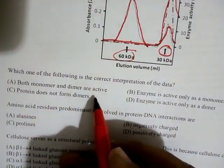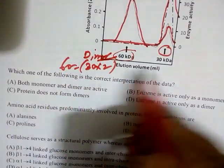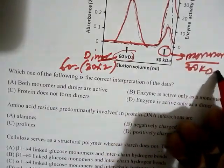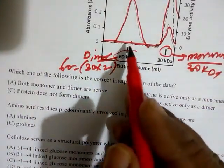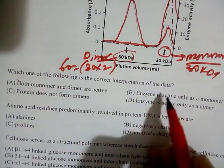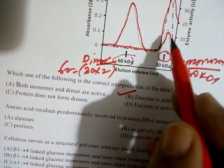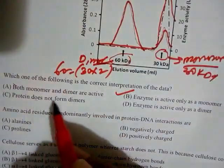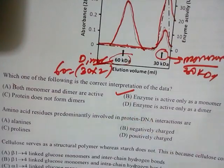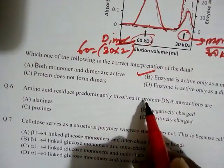This indicates the enzyme is a dimer (30 × 2 = 60 kDa), and the monomer unit is 30 kDa. Since activity is only present at the 30 kDa peak (monomer), the option 'enzyme is active only as a monomer' is correct. Both monomer and dimer are not active, since activity is absent at 60 kDa.